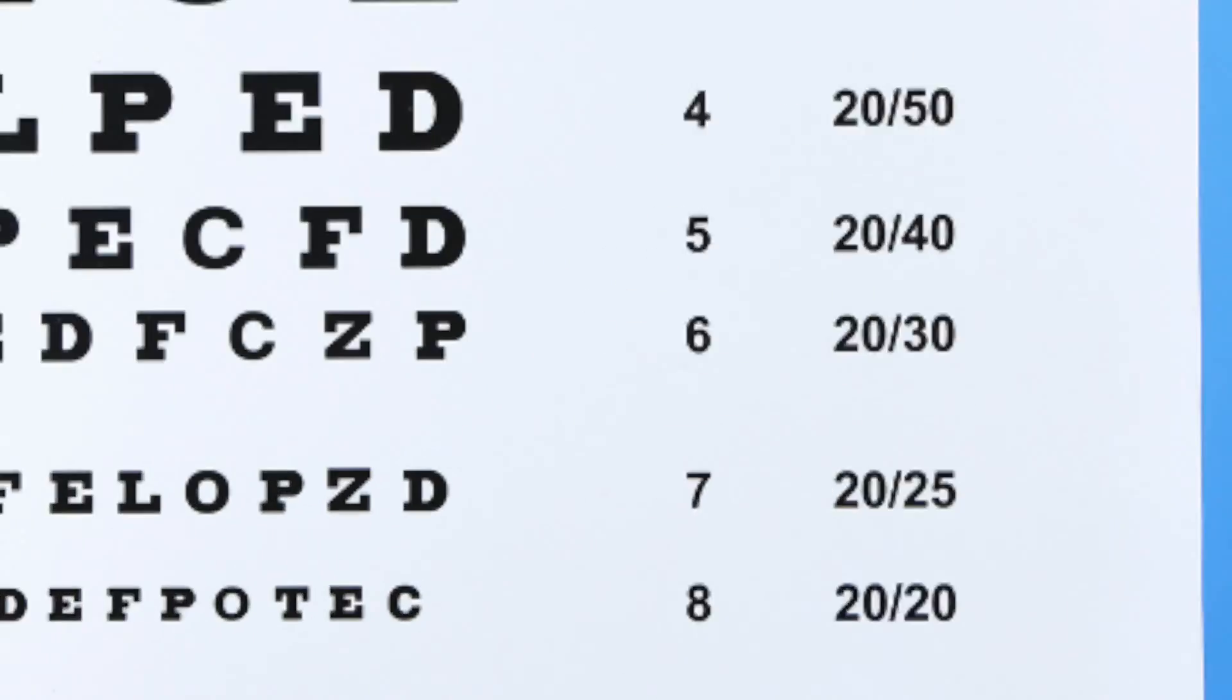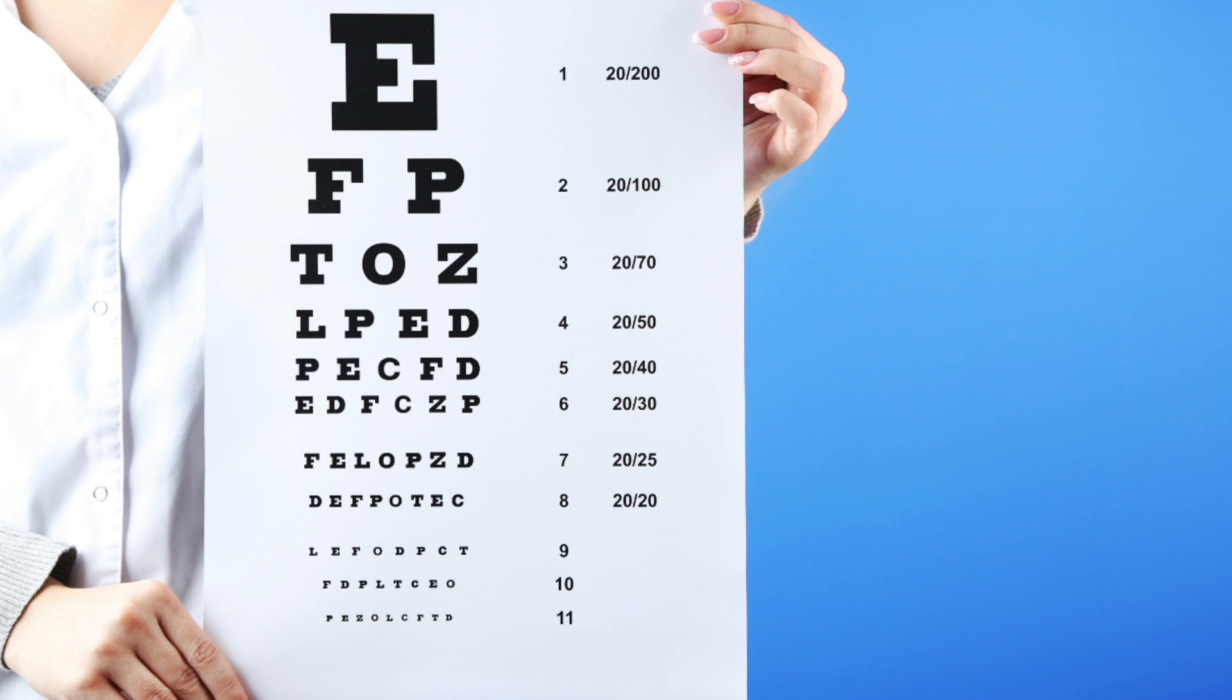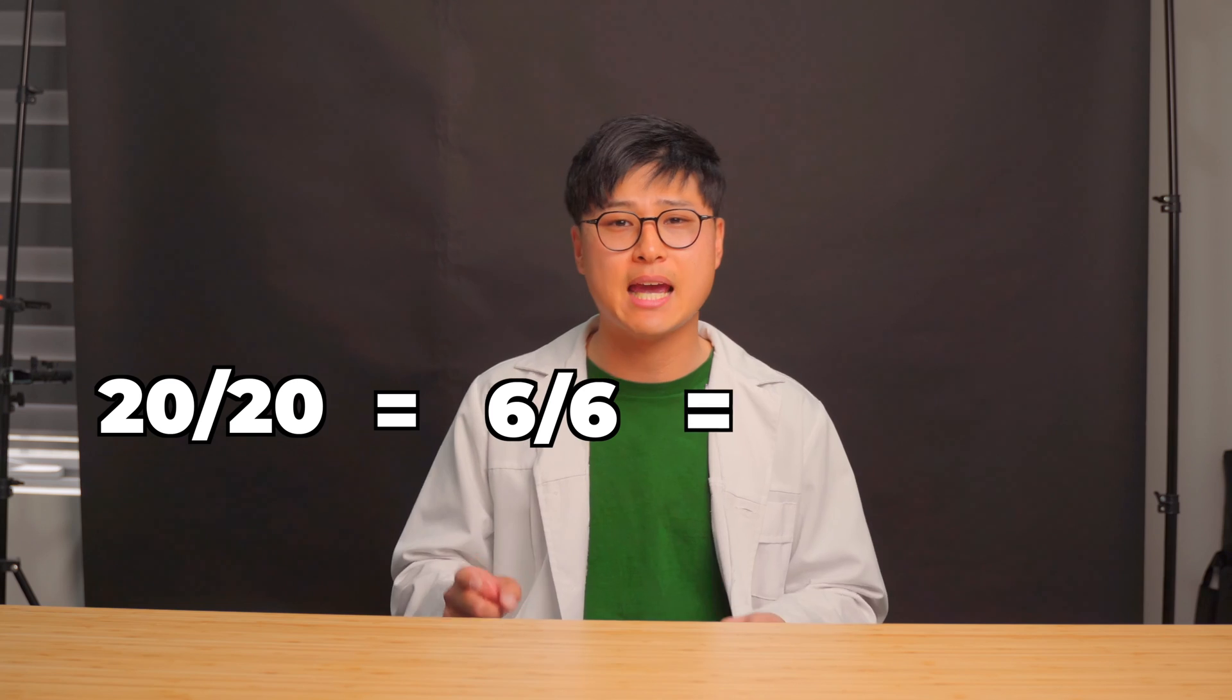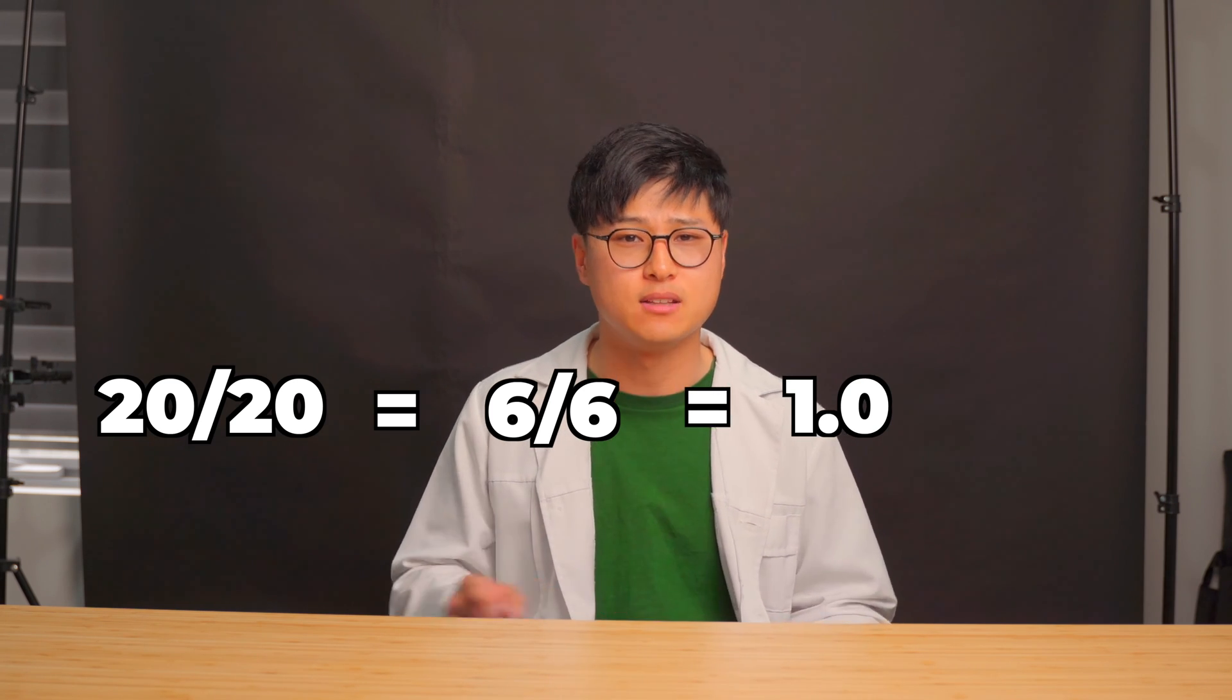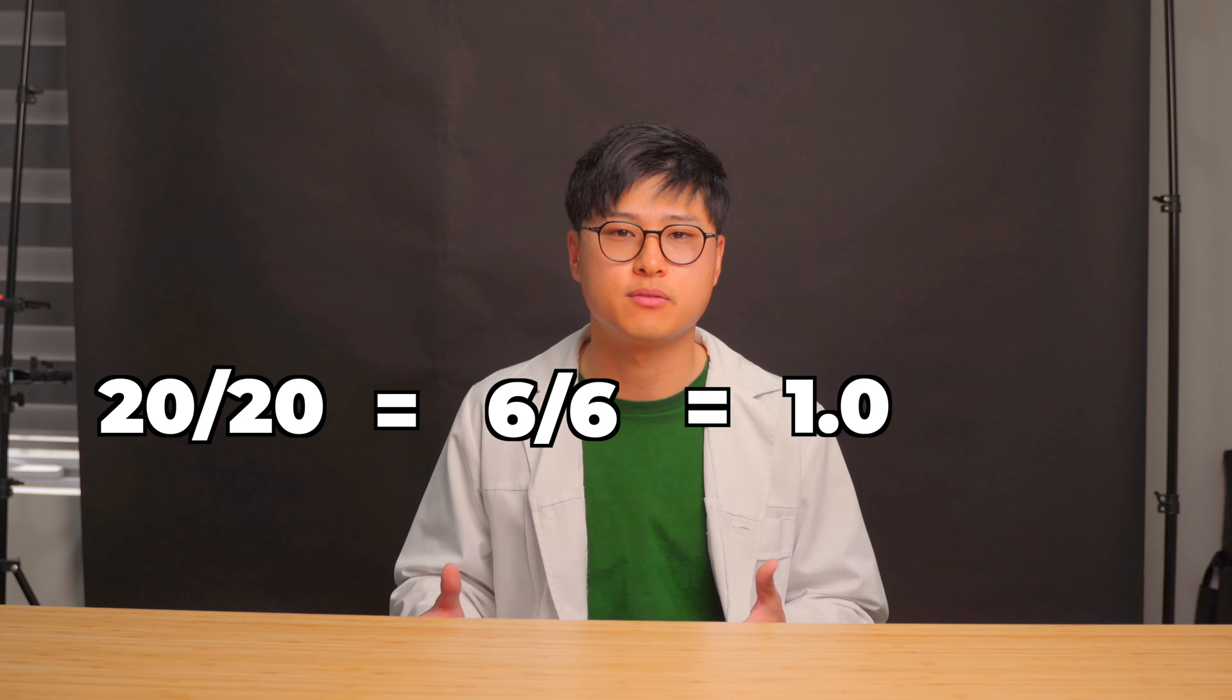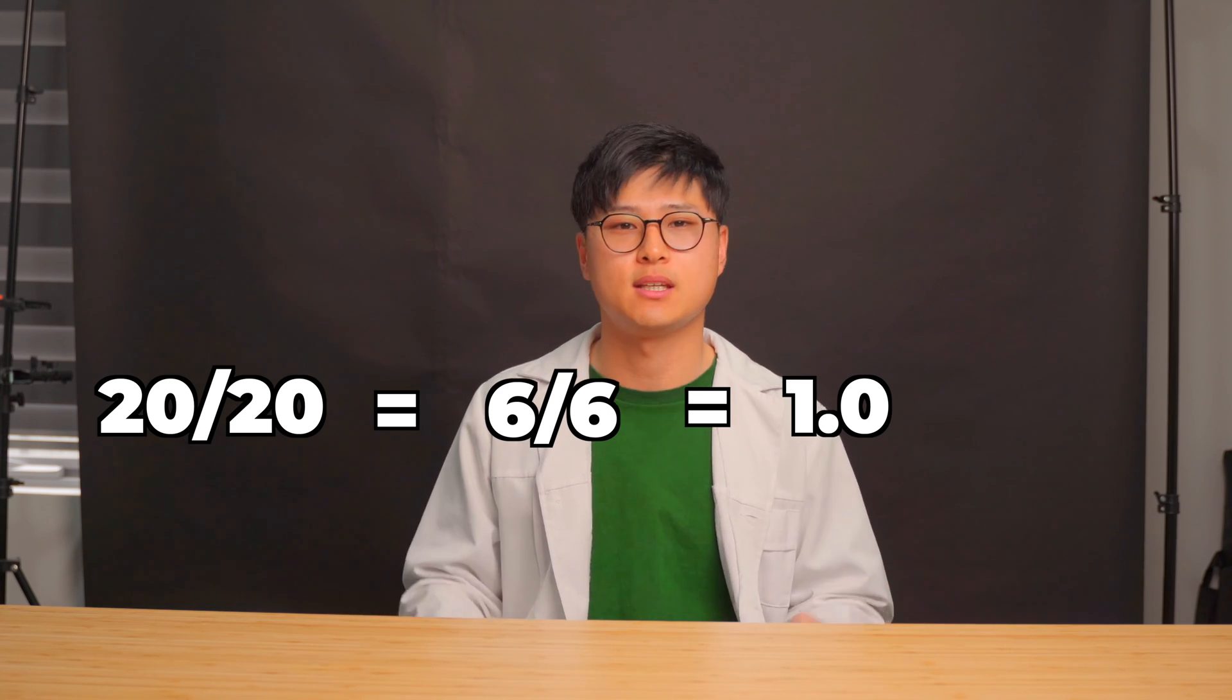A person with that level of visual acuity should be able to read letters that are as small as 8.7mm at a distance of 6m. 20-20 vision is again equivalent to 6/6 vision and 1.0 vision. And depending on where you are around the world, you may get results that are written differently. But now you know that they are the same thing.